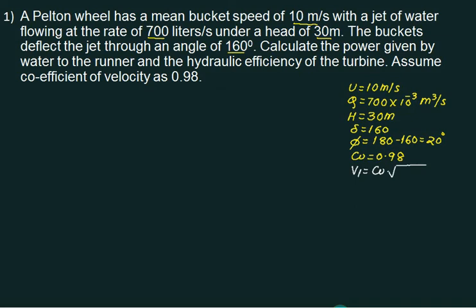We will consider one numerical here. A Pelton wheel has a mean bucket speed of 10 meters per second with a jet of water flowing at the rate of 700 liters per second under a head of 30 meters. The buckets deflect the jet through an angle of 160 degrees.